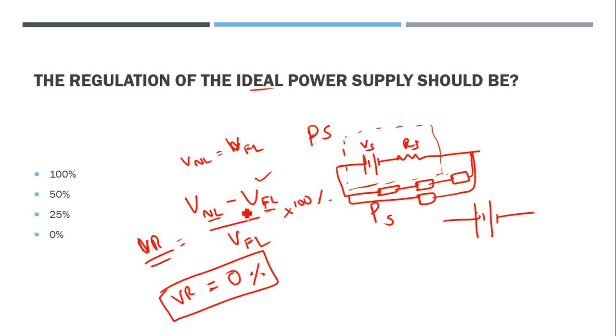Regulation of ideal power supply is: no load voltage minus full load voltage, divided by full load voltage, times 100 percent. This is the voltage regulation formula. In an ideal power supply, no load voltage equals full load voltage. In that case, both cancel each other and voltage regulation will be zero - that is zero percent.